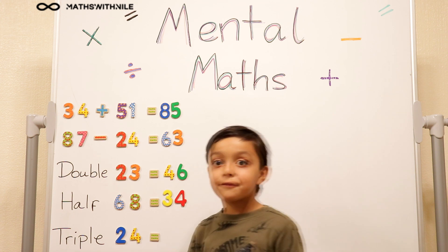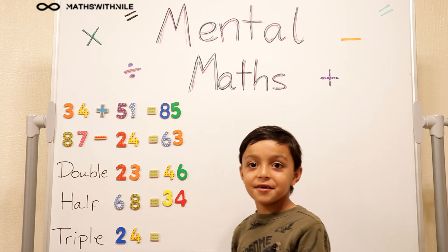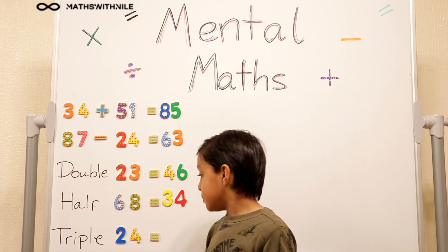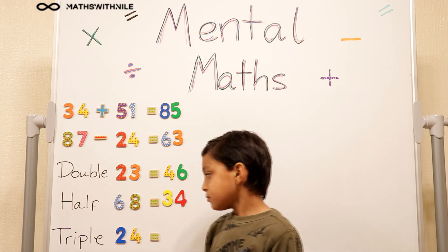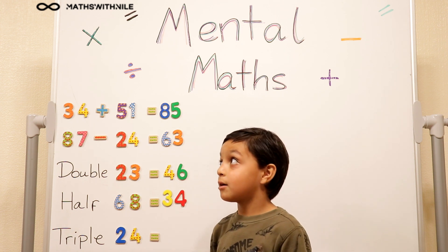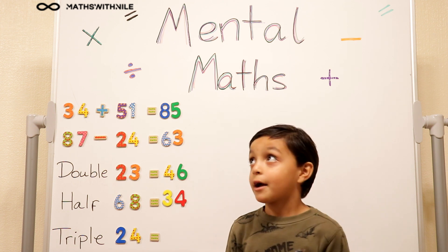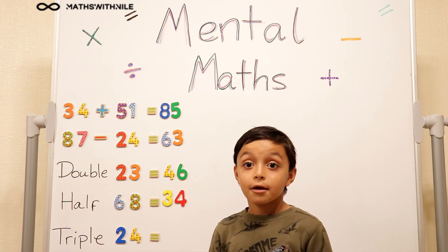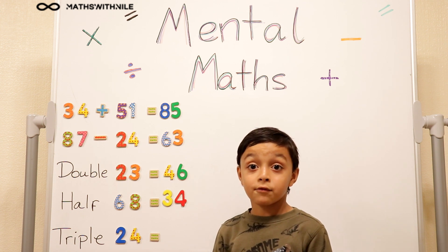And then triple 4. So double 4 is 8, and then 8, 9, 10, 11, 12. So triple 4 is 12. Yeah. And you did triple 20 was 60. So what are you going to do now? So now because 12 is more than 10, I'm going to do, it's going in 70s. Okay. So 10 plus 2 equals 12. So that means 72.